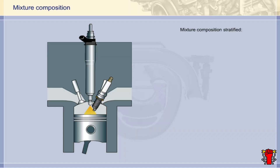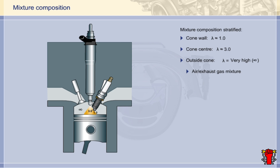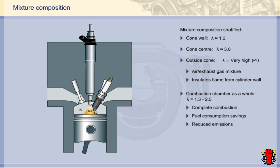The mixture composition in the cone-shaped cloud is stratified: the lambda value varies between around 1 at the cone wall and around 3 in the center of the cone, so the mixture gets leaner towards the center. Outside the conical cloud is a layer of air virtually free of fuel — the lambda value outside the spray cone is very high, virtually infinite. Strictly speaking this is an air-exhaust gas mixture, since external exhaust gas recirculation is activated in stratified charge mode. This air-exhaust gas layer insulates the flame from the cylinder wall, stabilizing the combustion temperature. The average lambda value for the combustion chamber as a whole is between 1.3 and 2.5, and this lean mixture ensures complete combustion, substantially reducing fuel consumption and pollutant emissions.